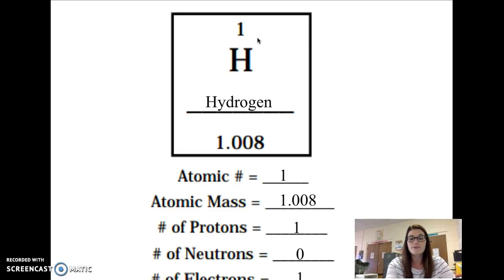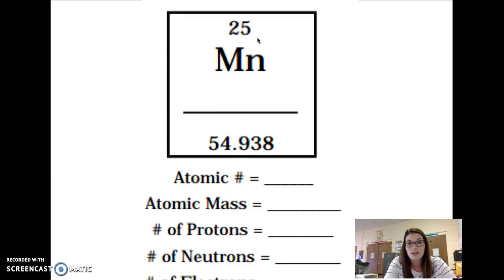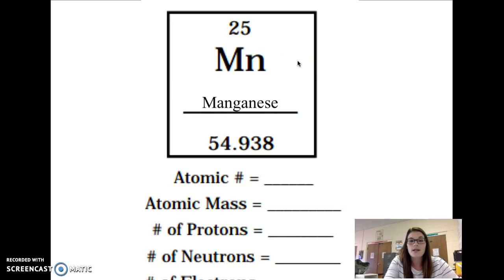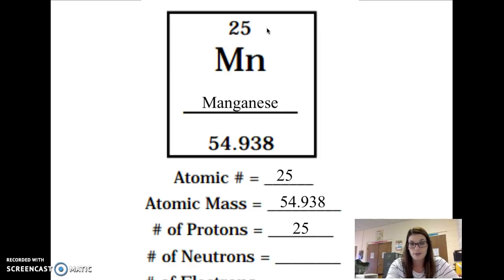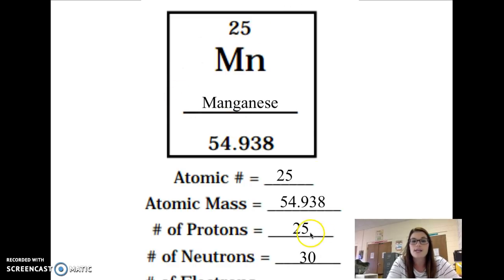Let's do one more example — go ahead and pause the video and see if you can do this on your own, then unpause for the answers. This element is Mn, which is manganese. Its atomic number is 25. Its atomic mass is 54.938. The number of protons is 25. For neutrons: 54.9 rounds up to 55; 55 minus 25 equals 30 neutrons. The electrons are the same as the protons: 25 electrons, the same as the atomic number. Make sure you have all those answers written down. Thanks for watching.